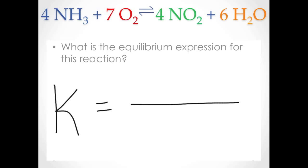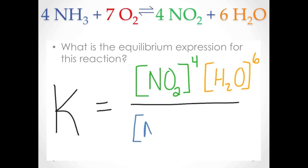The equilibrium expression for this reaction is written using the law of mass action. The equilibrium constant K is equal to the molar concentration of nitrogen dioxide to the 4th power times the molar concentration of water to the 6th power, divided by the molar concentration of ammonia to the 4th power times the molar concentration of oxygen to the 7th power. So did you get it?